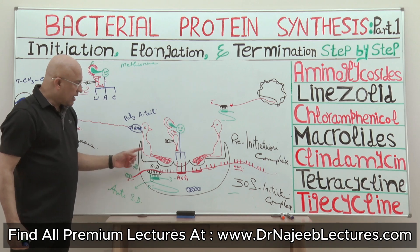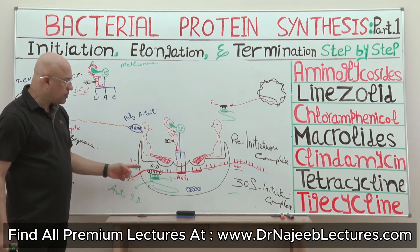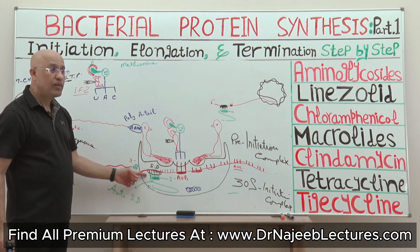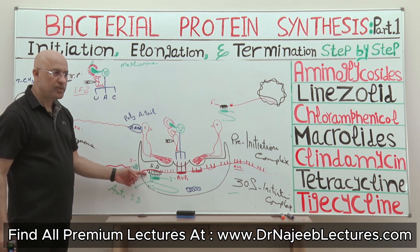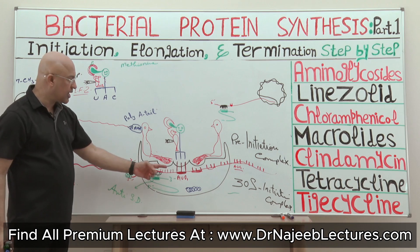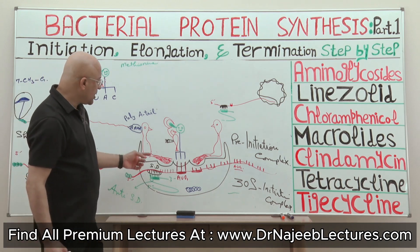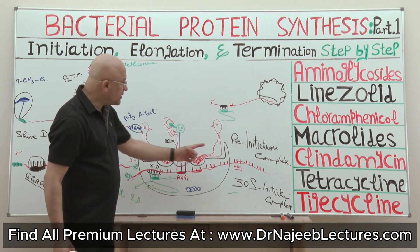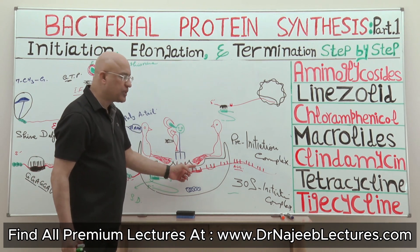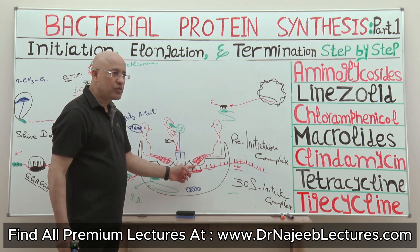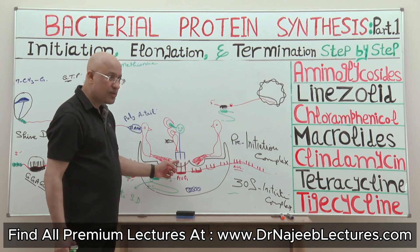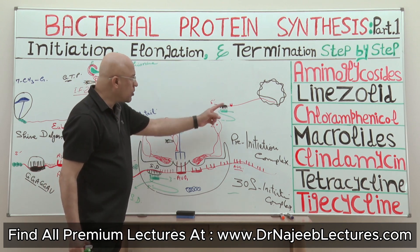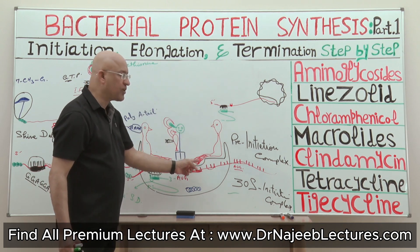IF3 specifically helps the Shine-Dalgarno sequence to interact with the anti-Shine-Dalgarno sequence and stabilizes the messenger RNA. Next, IF3 blocks the E site and IF1 binds with the A site, so before the initiator transfer RNA arrives, no aminoacyl transfer RNA can bind.